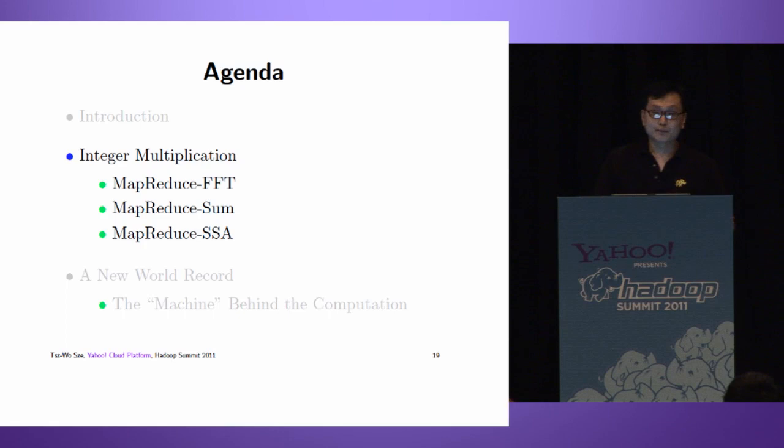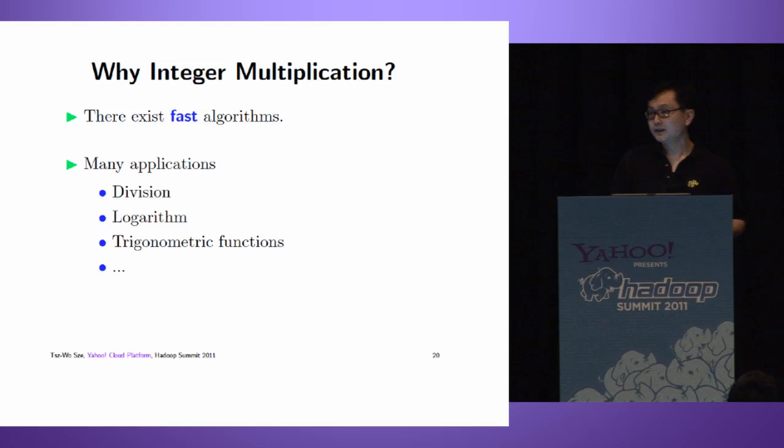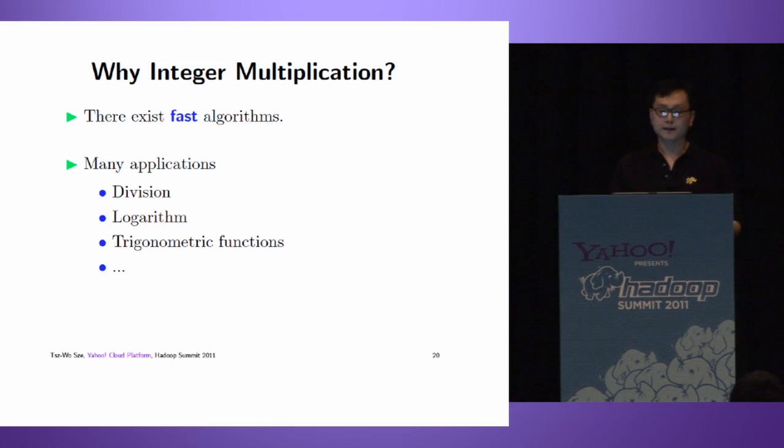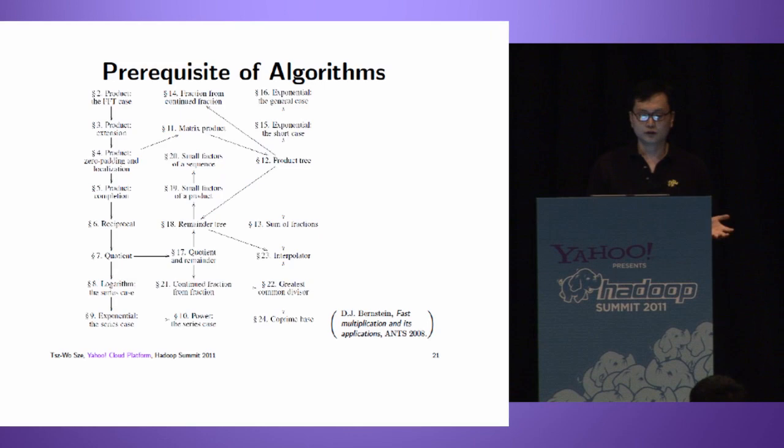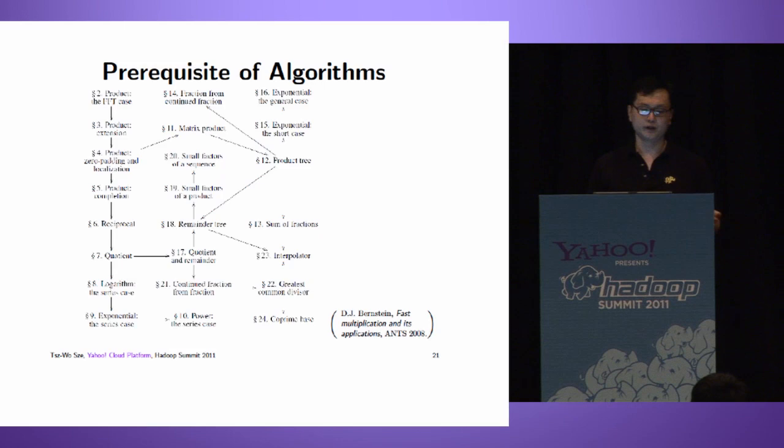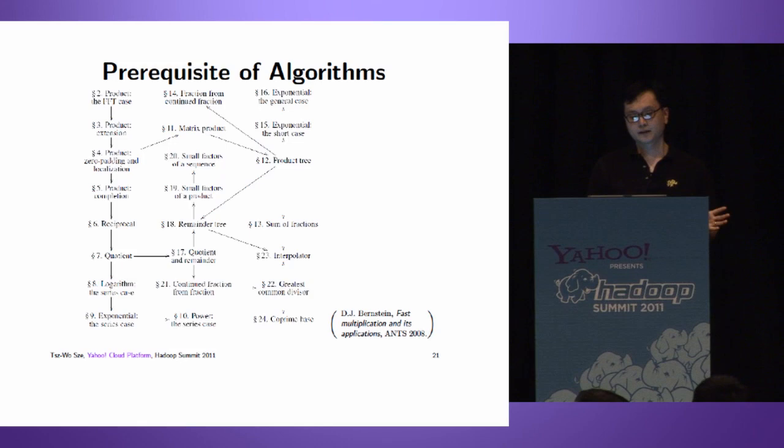Let's talk about integer multiplication with MapReduce. Why are we interested? Fast algorithms exist, and there are many applications - we can do division, logarithm, trigonometric functions. Here is a diagram of the prerequisites of algorithms. At the root, we have product. If we can do integer multiplication, we can do reciprocal, quotient, logarithm, exponential, powering, etc. Product is the basic algorithm.